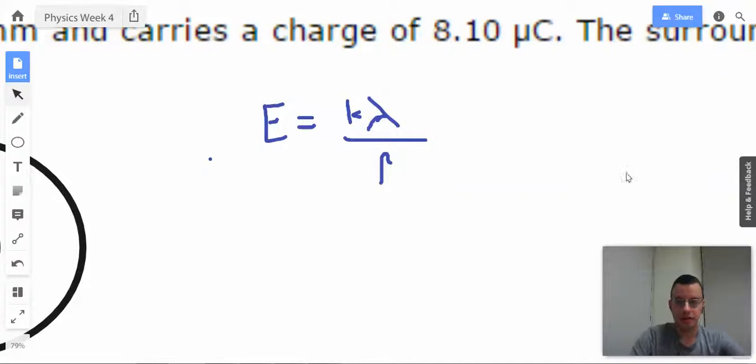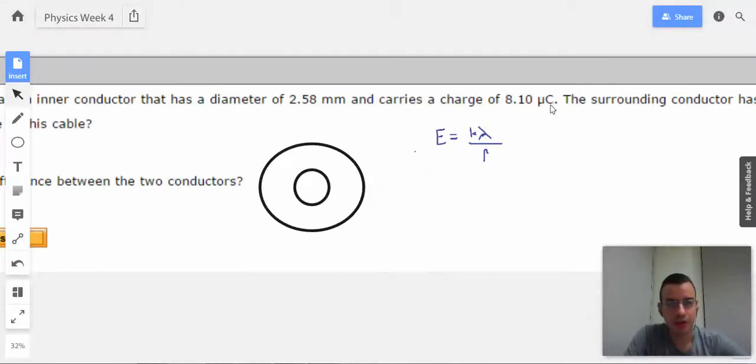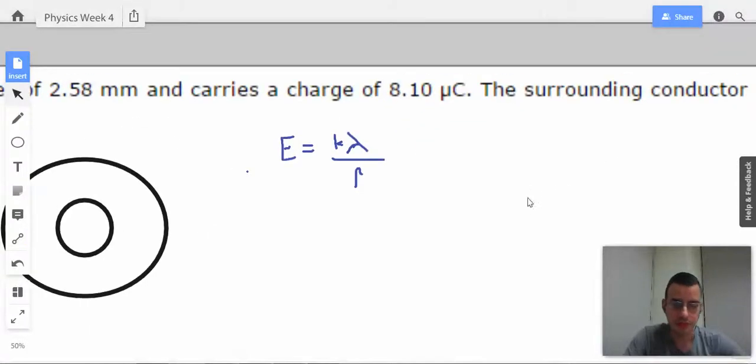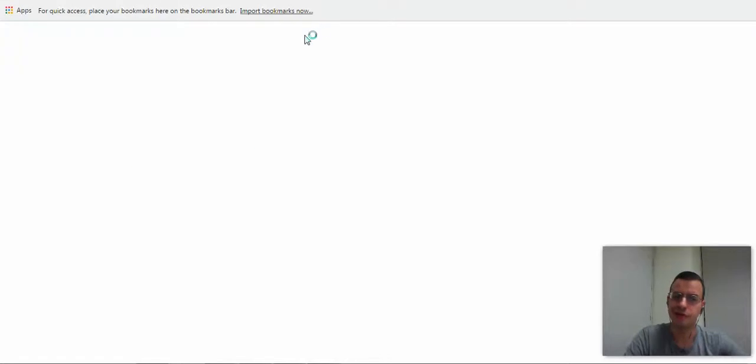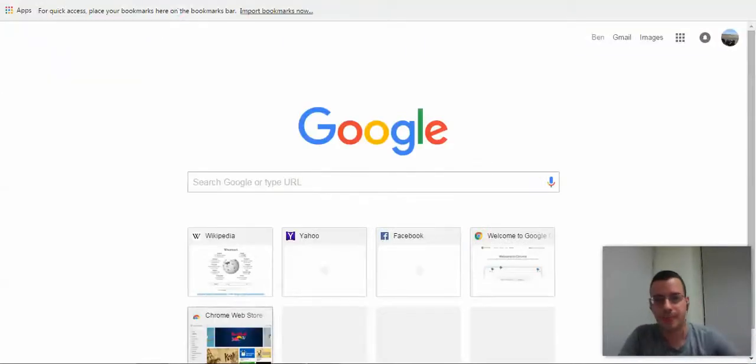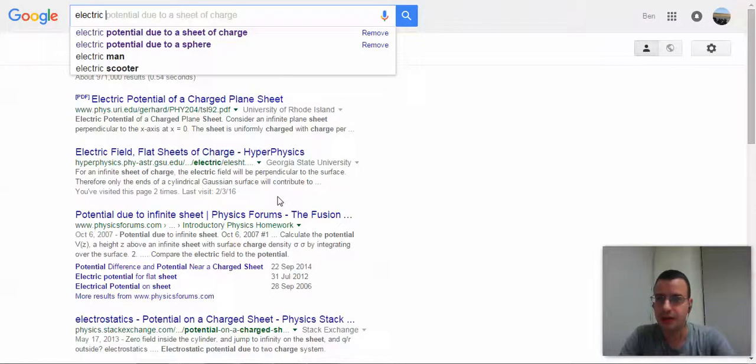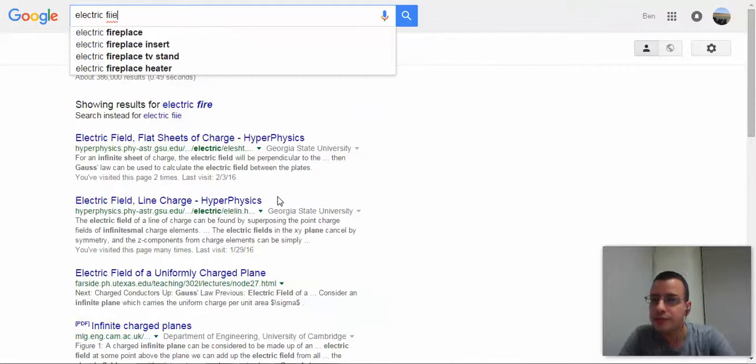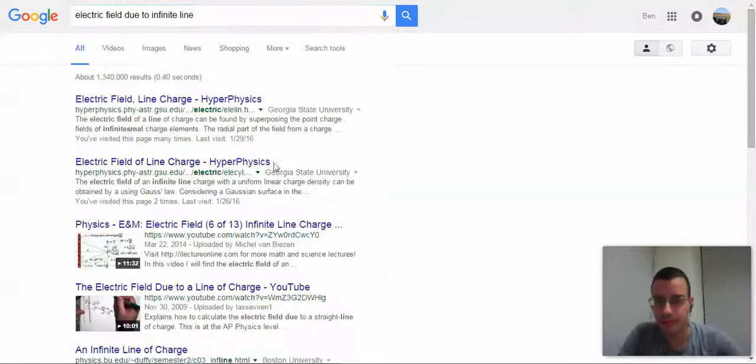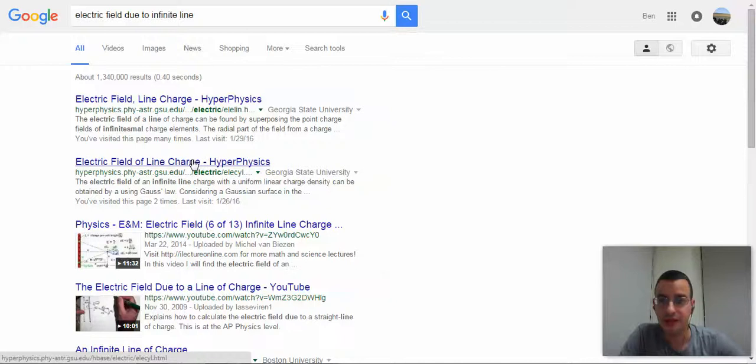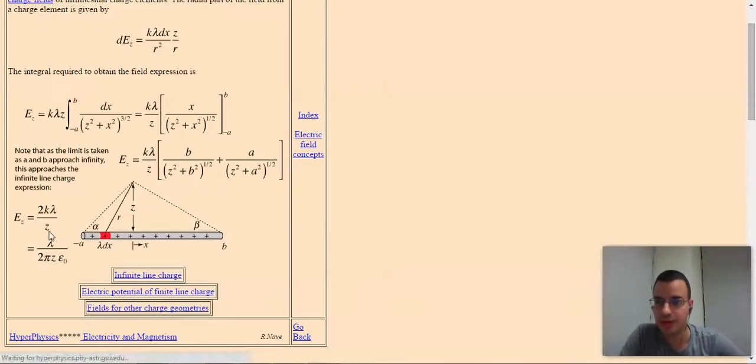Let's see here, I'll say K lambda over R. They don't give us lambda though, but they do give us a total charge. Actually wait, it's 2 lambda K over R. I should check that one real quick. You should have this one memorized. Electric field due to an infinite line on axis. Yep, 2K lambda over Z.